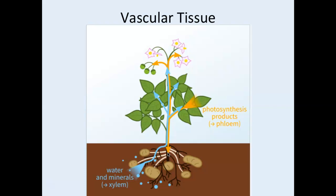Vascular tissue allows plants to grow larger because the plant can distribute water and sugar throughout its body. A tiny plant like a moss lives close to the ground and its entire body can absorb water in moist habitats. But once a plant develops a vascular system — a network of tubes to transport water — it can grow bigger, moving water from roots to the upper parts of the plant.